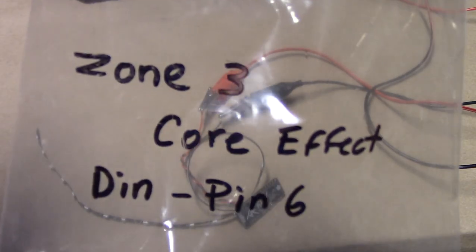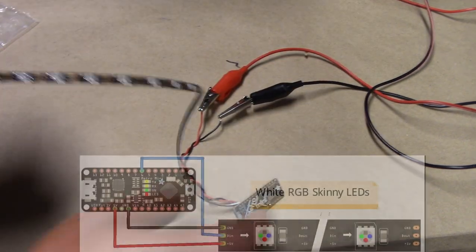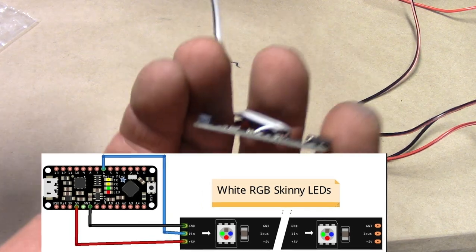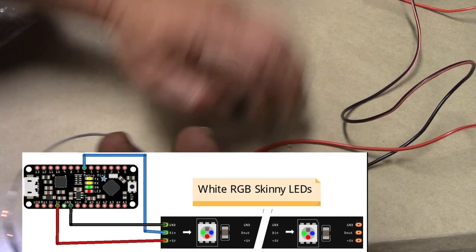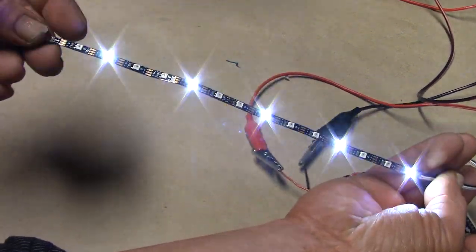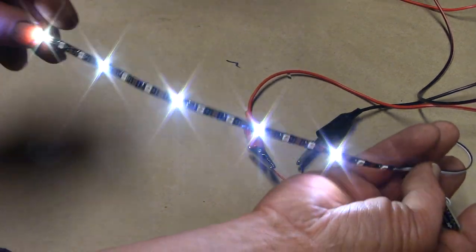Okay, this next one is zone 3 core effect. Again, it's using this little micro board, micro computer. Let's power this on. And you can see that effect inside of that bottom core. There is your spinner.